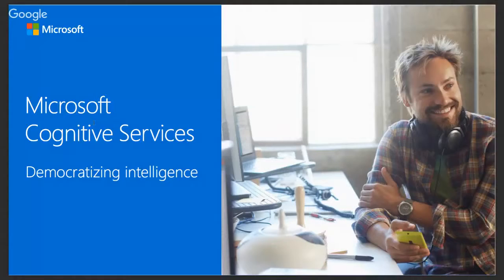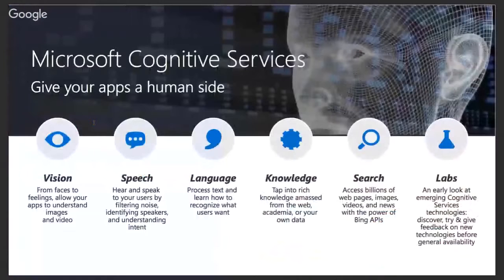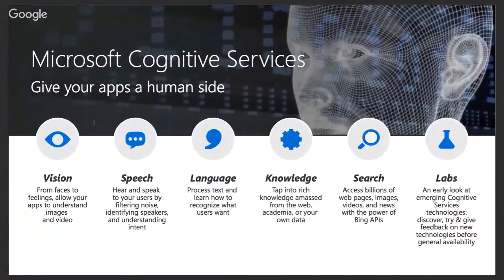We're going to cover three things: cognitive services as a whole — what it contains and how to use it — then Azure Functions is second, and Azure Logic Apps is third. The whole point of cognitive services is to make it very easy to create apps quickly, easily, and affordably. We basically offer the full stack of vision, speech, language, knowledge, and search.